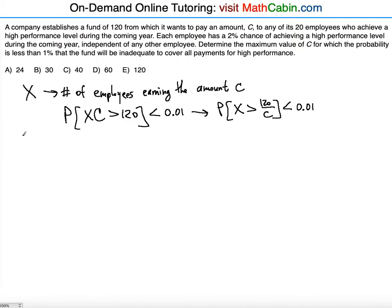We need to understand that since we're told the employees are independent and each has a 2% individual probability of achieving high performance, we're talking about a binomial distribution. The random variable X follows a binomial distribution with parameter N equals 20 — the total number of employees — and P equals 0.02, the individual probability of achieving high performance.